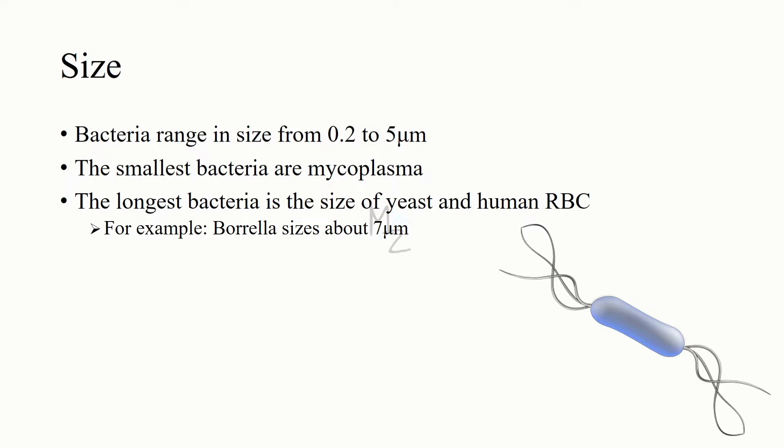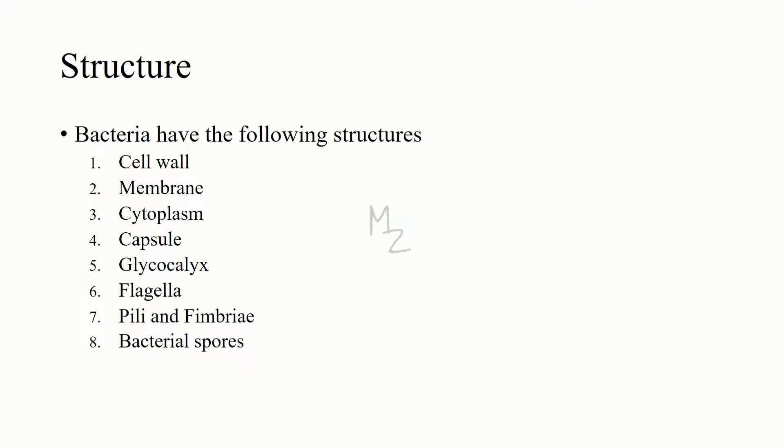Size: bacteria range in size from about 0.2 to 5 micrometers. Mycoplasma is the smallest bacteria, and the longest bacteria rods are the size of some yeast and human red blood cells. For example, Borrelia sizes about 7 micrometers.